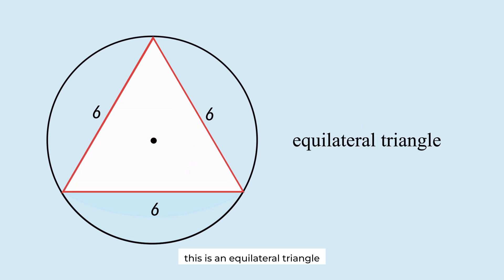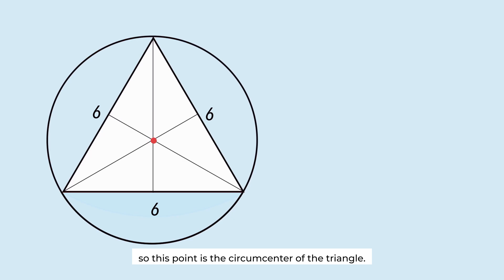This is an equilateral triangle inscribed in a circle. So, this point is the circumcenter of the triangle. In an equilateral triangle, the circumcenter coincides with the centroid. The centroid divides the median into a 2 to 1 ratio. Since this length is 3 root 3, this length is 2 thirds of that length.